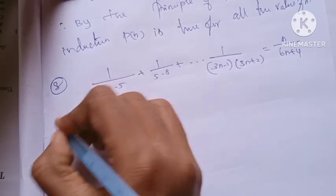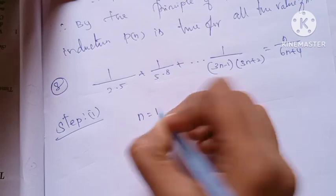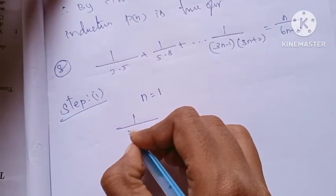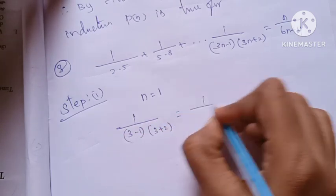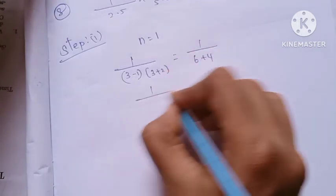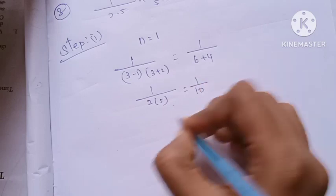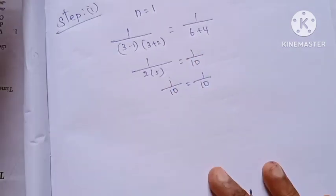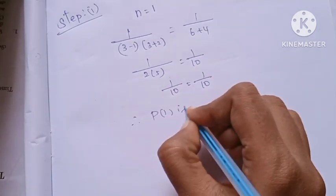Step 1: I am going to put n equal to 1. Substituting, we get 1/((3·1-1)(3·1+2)) = 1/(2·5) = 1/10. And the right-hand side gives 1/(6·1+4) = 1/10. Both sides are equal, therefore P(1) is true.